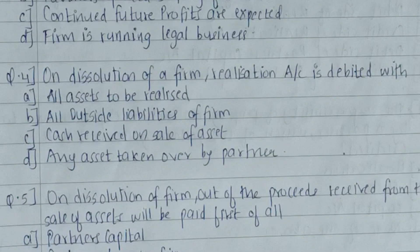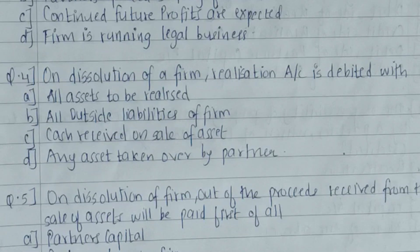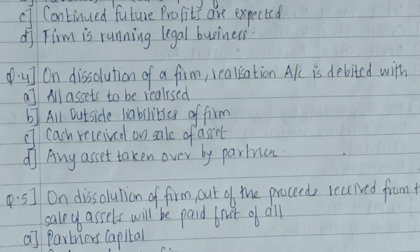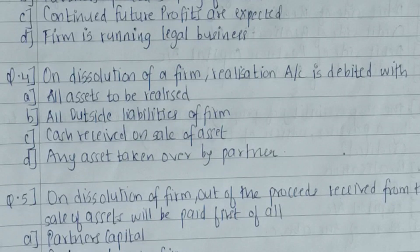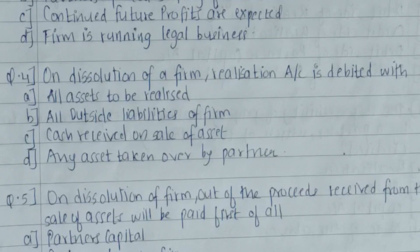Fourth question: on dissolution of a firm, the realization account is debited with — all assets, all liabilities, cash received, or any asset taken over by a partner. If a partner takes over an asset it is recorded on the credit side of the realization account; if a partner takes over a liability it is on the debit side. The realization account is debited with all assets — we start with sundry assets on the debit side and sundry liabilities on the credit side. The answer is A.